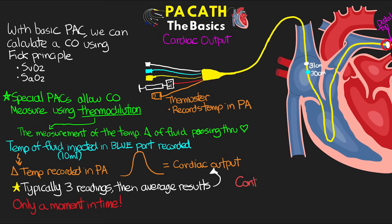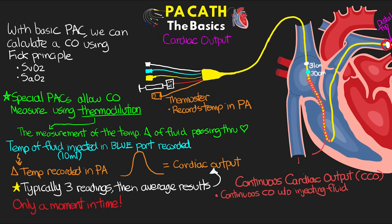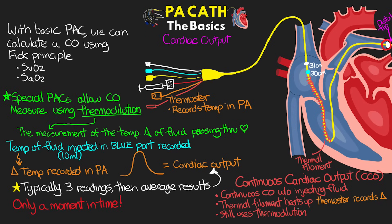Thermodilution gives us cardiac output at a moment in time and requires infusing fluid each time. Enter the continuous cardiac output (CCO) catheter. This PA catheter provides a continuous cardiac output and cardiac index reading without injecting any fluid. It uses a thermal filament along the catheter from the right atrium to the right ventricle — the filament turns on and off while the thermistor records temperature changes. This happens repeatedly and continuously, giving us a real-time cardiac output and cardiac index reading.